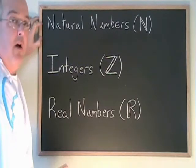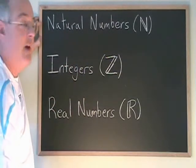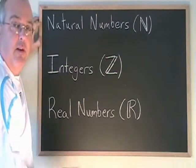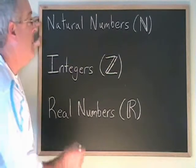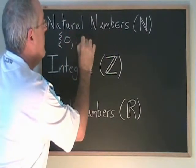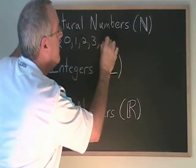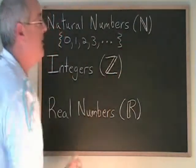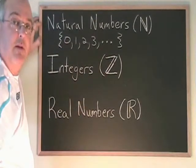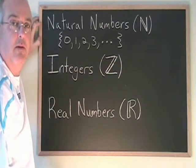The three most common universes are the natural numbers, the integers, and the real numbers. I like to describe natural numbers as the numbers that small children learn to work with in math first. They include 0, 1, 2, 3, and they continue going on forever in the positive direction. There are no fractions or decimals included, and they can also be described as the positive whole numbers and 0.